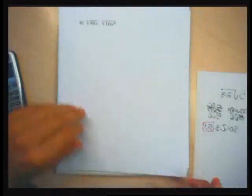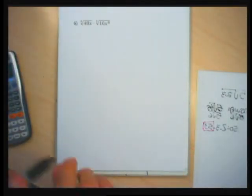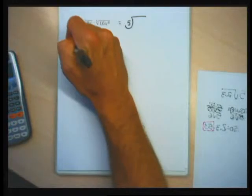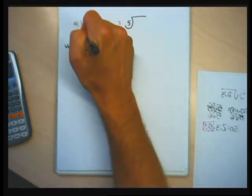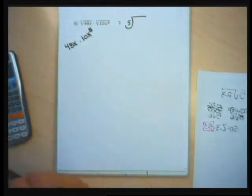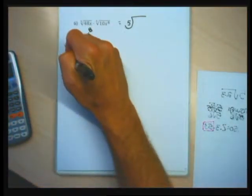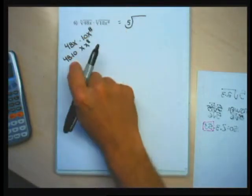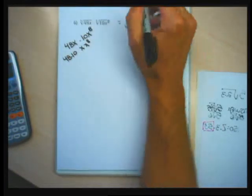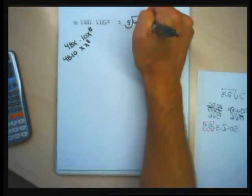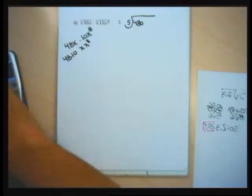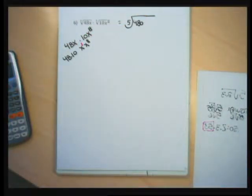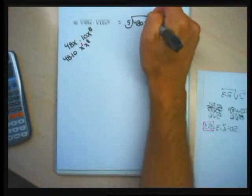Problem 6 is multiplying two fifth roots. When you multiply two fifth roots, you get another fifth root. I have to multiply what's under the radicals: 48x times 10x to the 8th. I multiply the like pieces — 48 times 10 equals 480, and for the x's I add the exponents. The x without a written exponent had an implied 1, so x times x to the 8th gives x to the 9th.